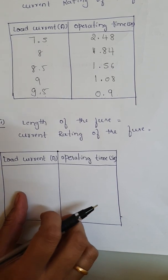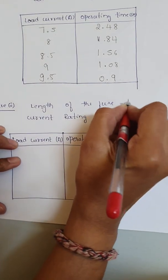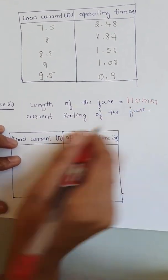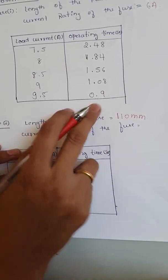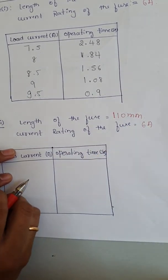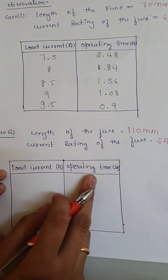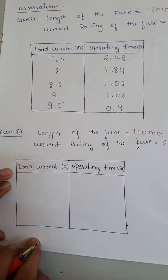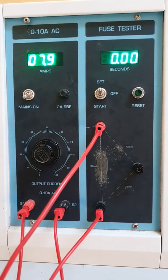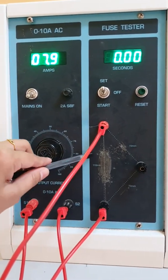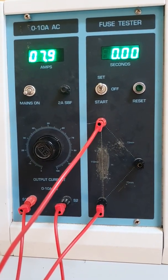This completes case 1. For case 2, we take the fuse length as 110 mm. The current rating of the fuse remains the same — 6 amperes — since we are using the same fuse material for both cases. The fuse terminal is connected between the two terminals at a distance of 110 mm, as noted in the tabular column.